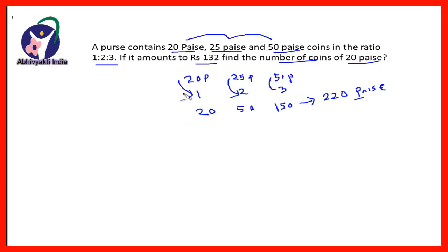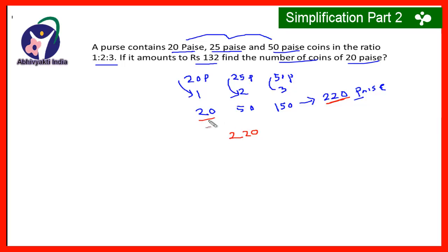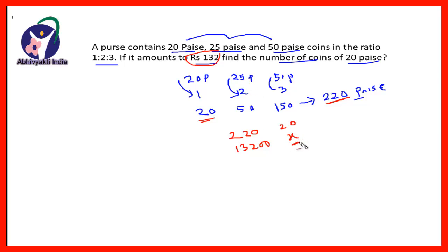Now we have to find the number of coins of 20 paise. When the total amount is 220 paise, the value of the 20-paise coins is 20 paise. And when the total amount is 132 rupees — that means 13200 paise — then what will be the total amount of 20-paise coins? This is a direct variation: multiply 13200 × 20 ÷ 220.